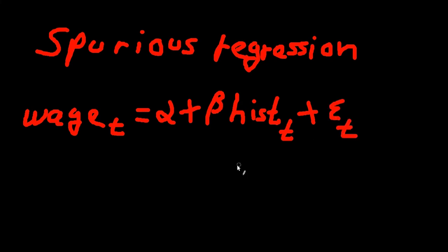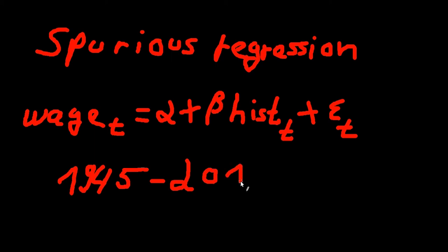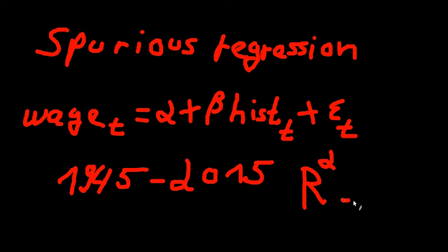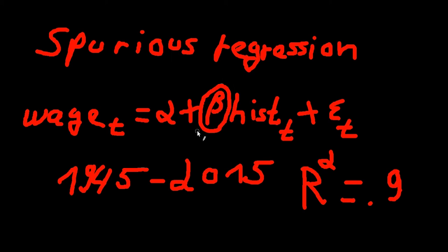You have yearly data ranging from 1945 until 2015. You run a regression, take a look at the summary statistics, and you see R-squared is equal to 0.9. And beta is highly significant and has a very high value.